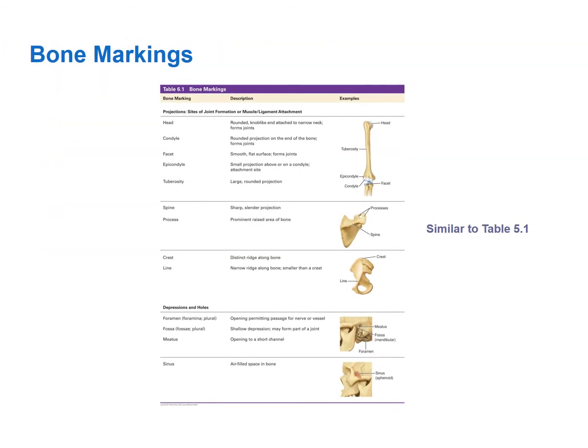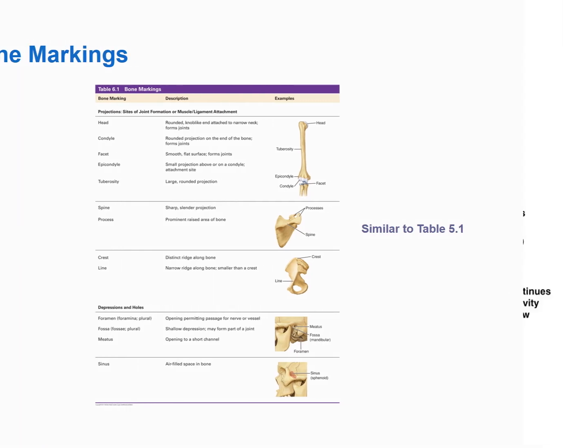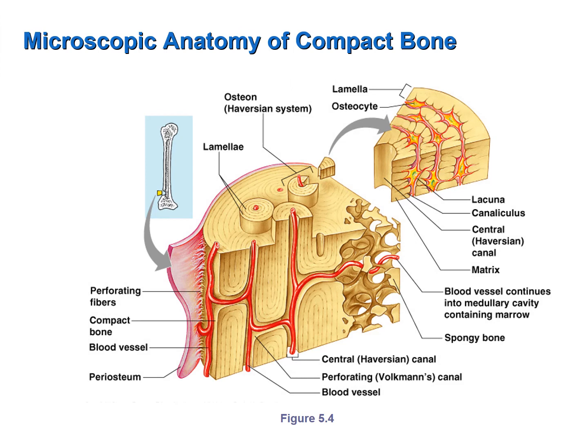This is a figure from your book that illustrates and describes the various bone markings. I am not going to require you to identify or define any of the bone markings in lecture. Now that we have discussed the gross anatomy of long bone, let's turn our attention to the microscopic anatomy of compact bone.